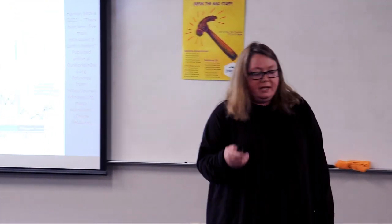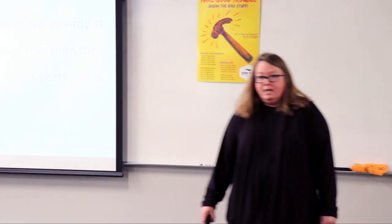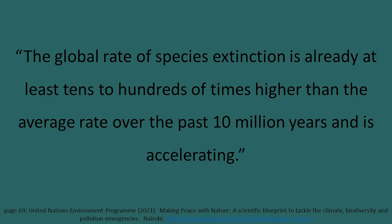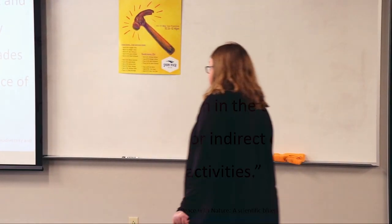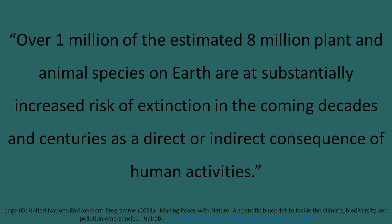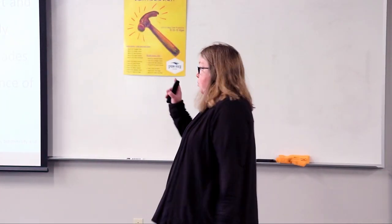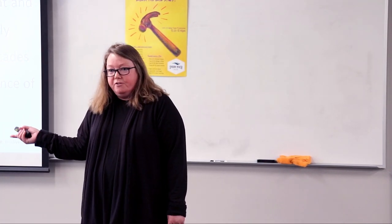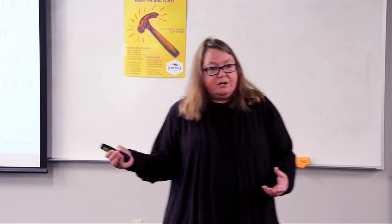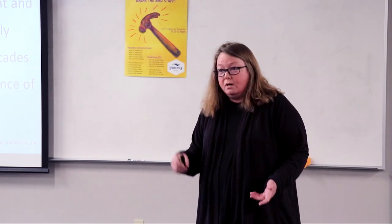As you can see on the tail end of the graph, we're starting to see an uptick again. This data is from the United Nations: the global rate of species extinction is already at least tens to hundreds of times higher than the average rate over the past 10 million years and is accelerating. Over one million of the estimated eight million species on Earth are at substantially increased risk of extinction in the coming decades and centuries due to direct or indirect human activity. One in eight species are potentially going to go extinct because of one organism — not some random event, but one species and what we've been doing. That's the war we've been waging.